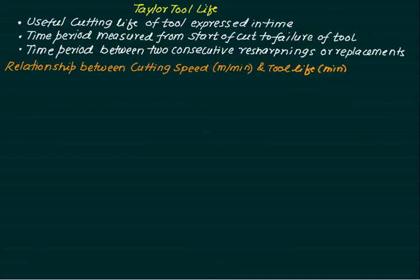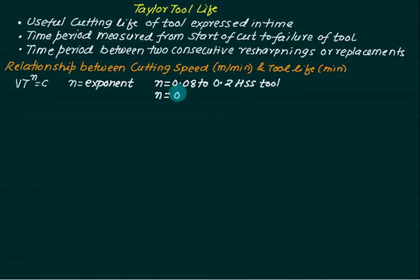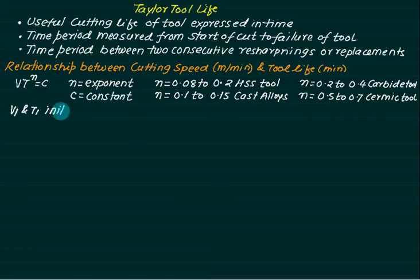The cutting speed for which the tool failure will occur is also a measure. The relation between cutting speed and tool life is normally given by vt^n = C, where n is the index or exponent of Taylor's tool life. It takes different values for different tool materials: 0.08 to 0.2 for HSS tools, 0.1 to 0.15 for cast alloys, 0.2 to 0.4 for carbide tools, and 0.5 to 0.7 for ceramics. C is called the constant.